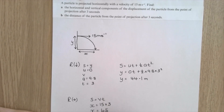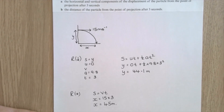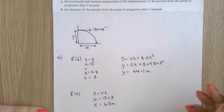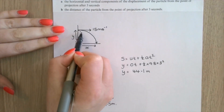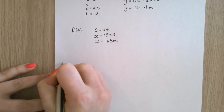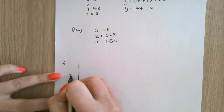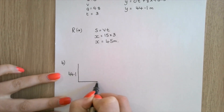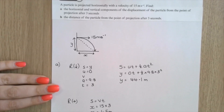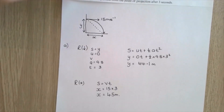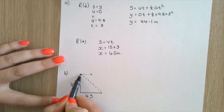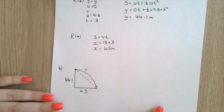Part b: the distance of the particle from the point of projection after 3 seconds - that's the dashed line, forming a right-angle triangle. I have y = 44.1 and x = 45. The point of projection is where it started, and I need the distance between that and where it ended up. Using Pythagoras: